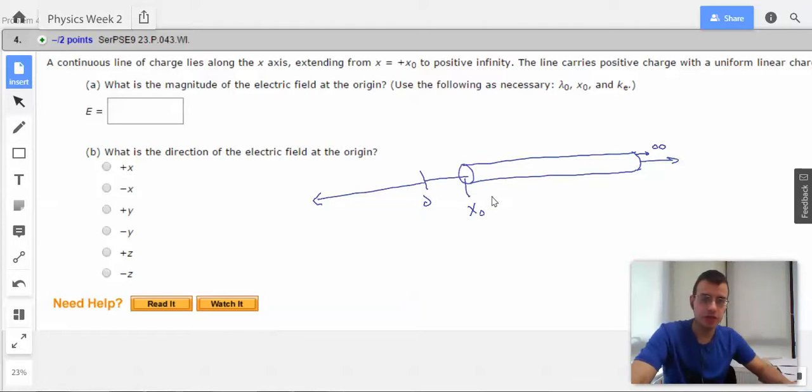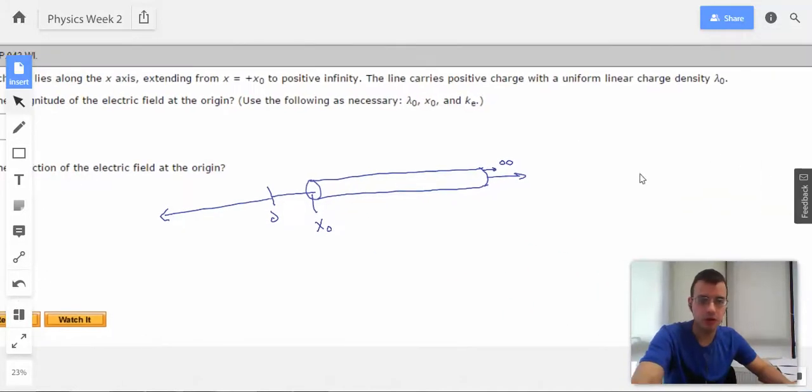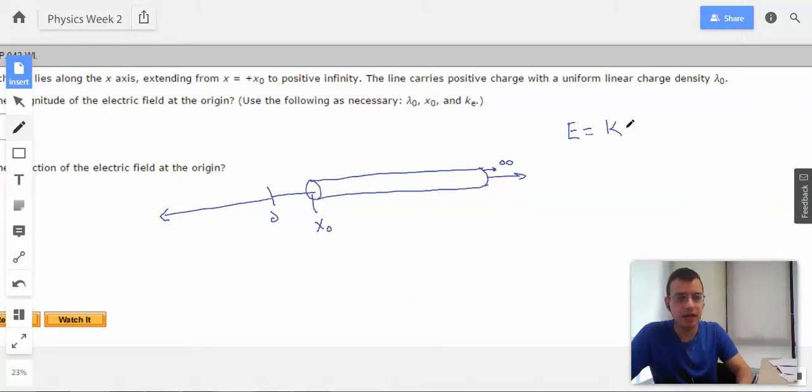So the equation for electric field is E equals k q over r squared. I'm going to say a small bit of E is created by a small bit of q. They give us a lambda here, so I'm going to assume we use lambda. So I'm going to use my knowledge that lambda is a small bit of q over a small bit of length.